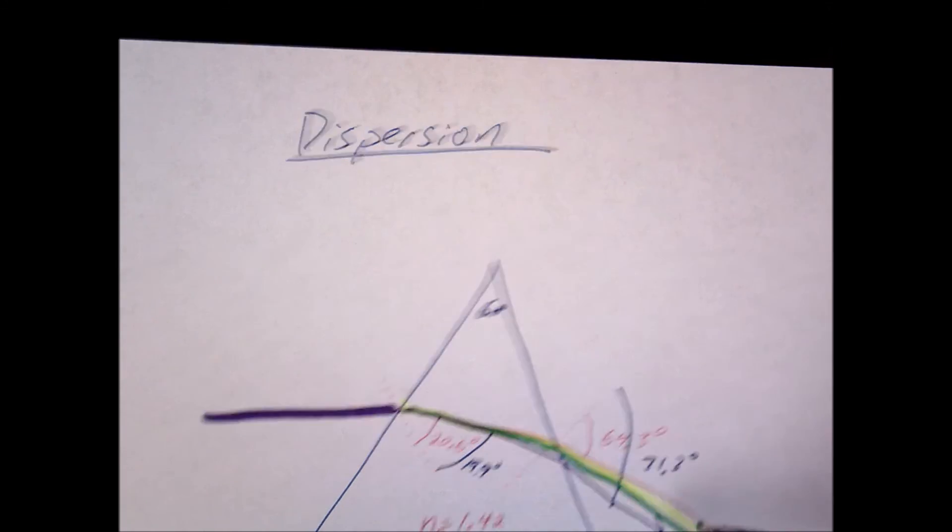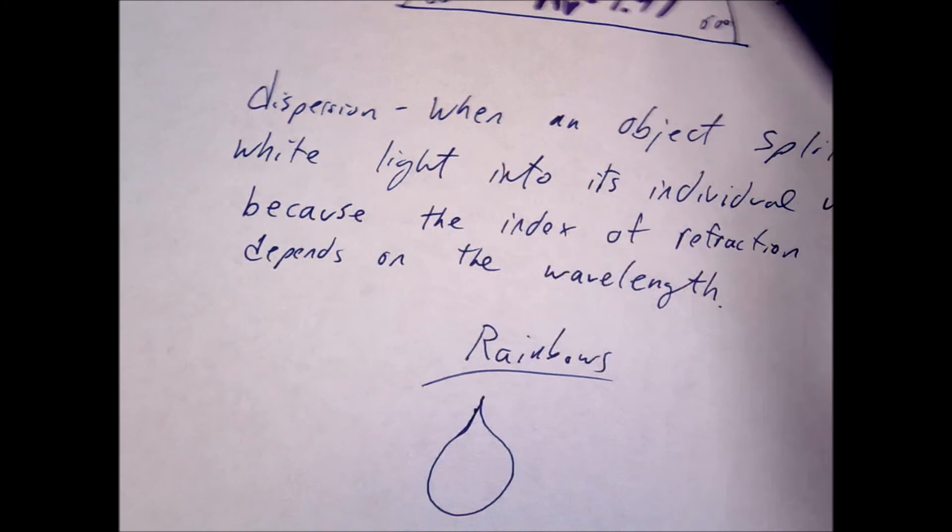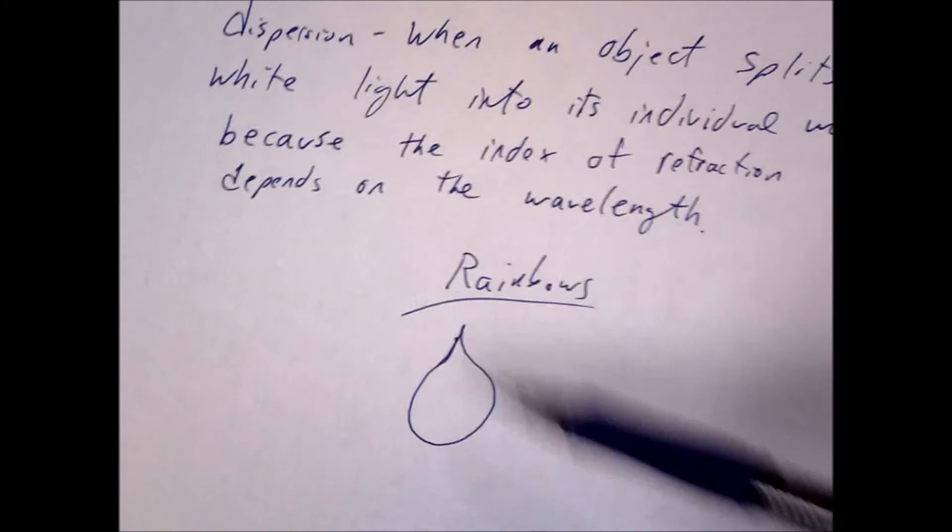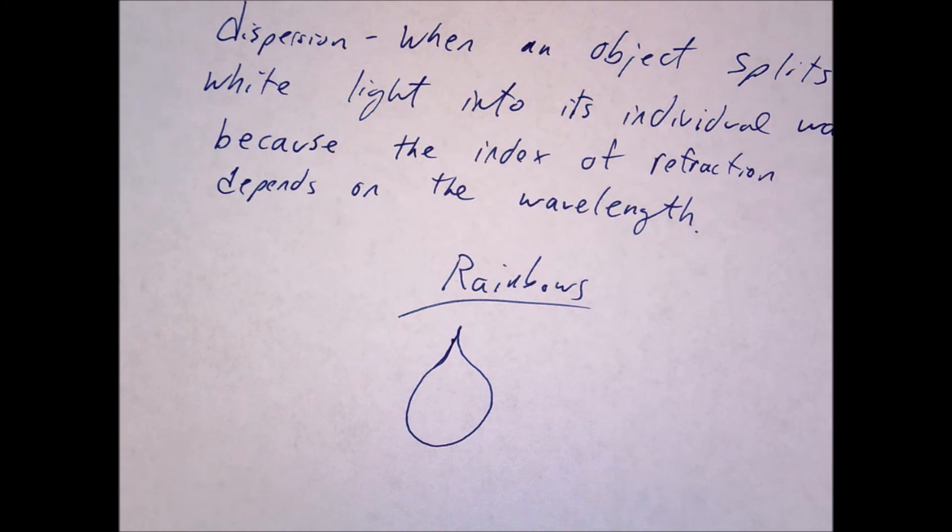And what does a raindrop kind of look like? Okay, a circular prism, right? Like a rounded prism.